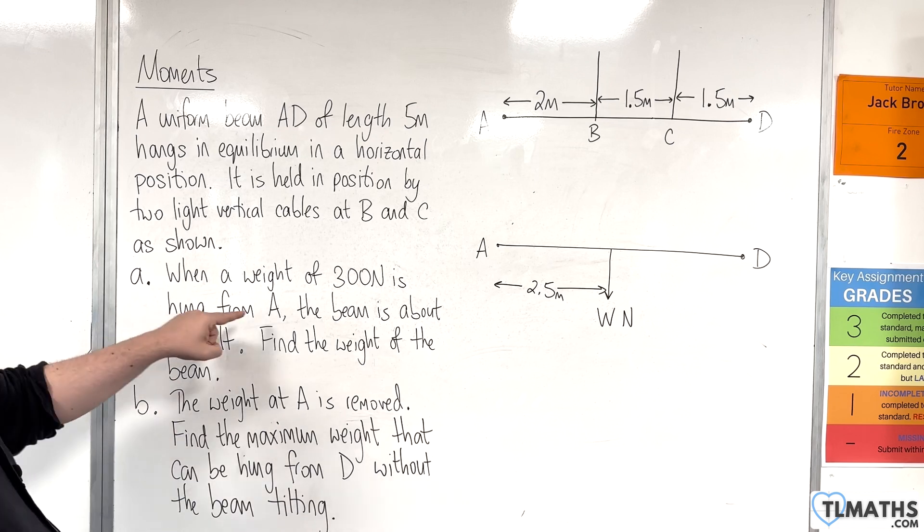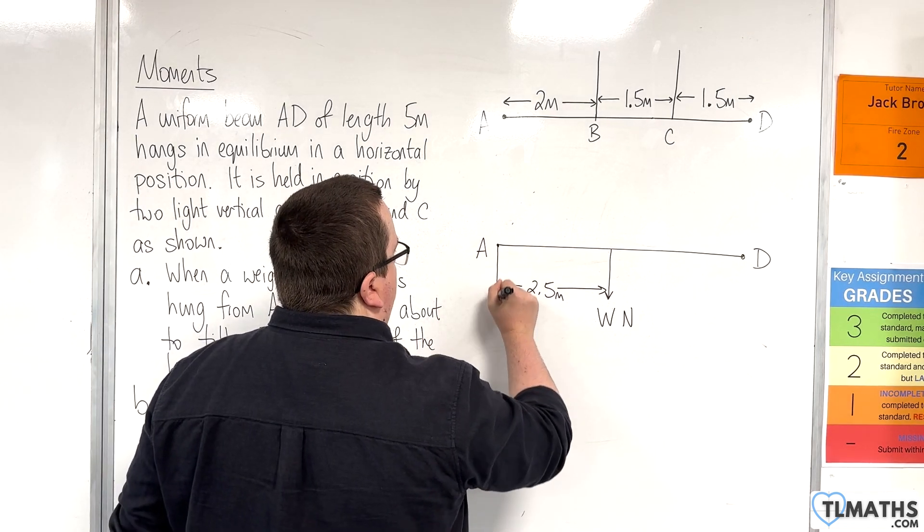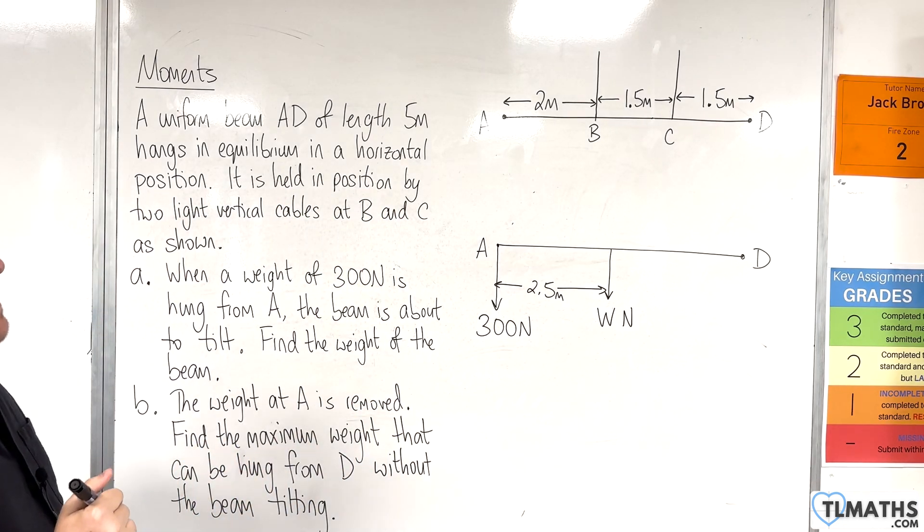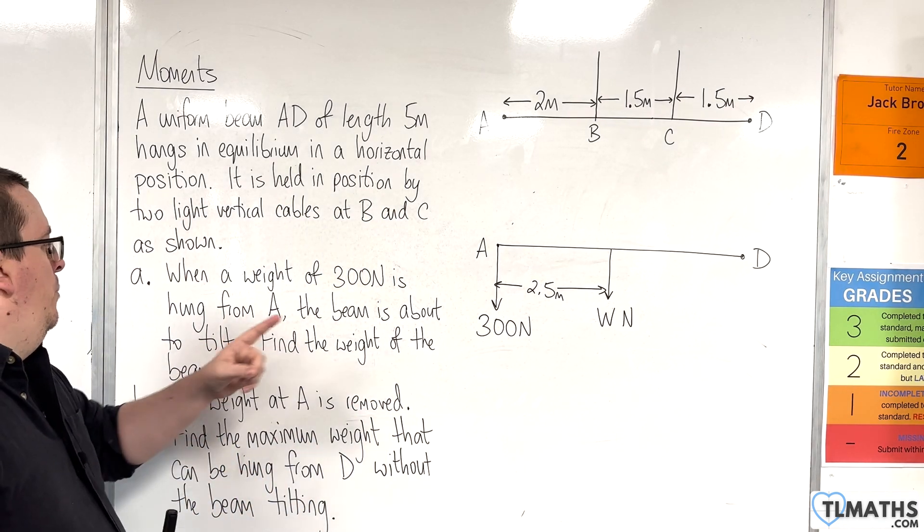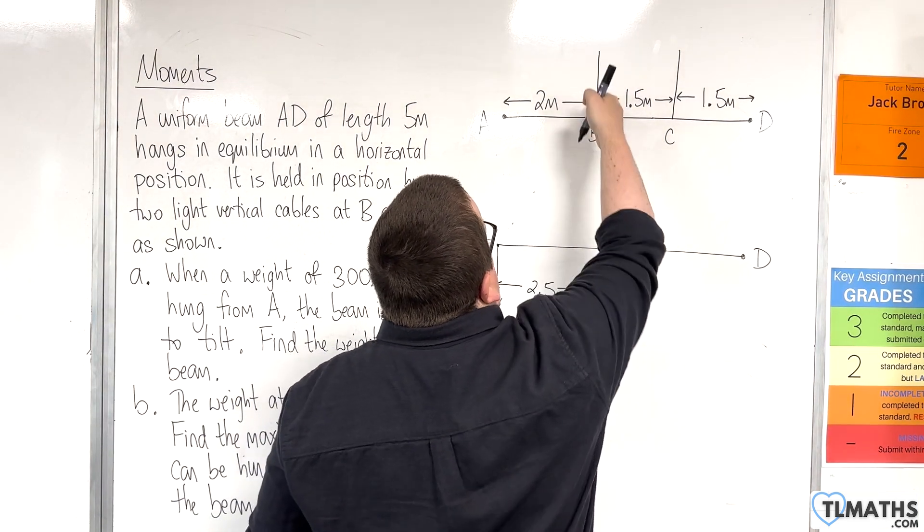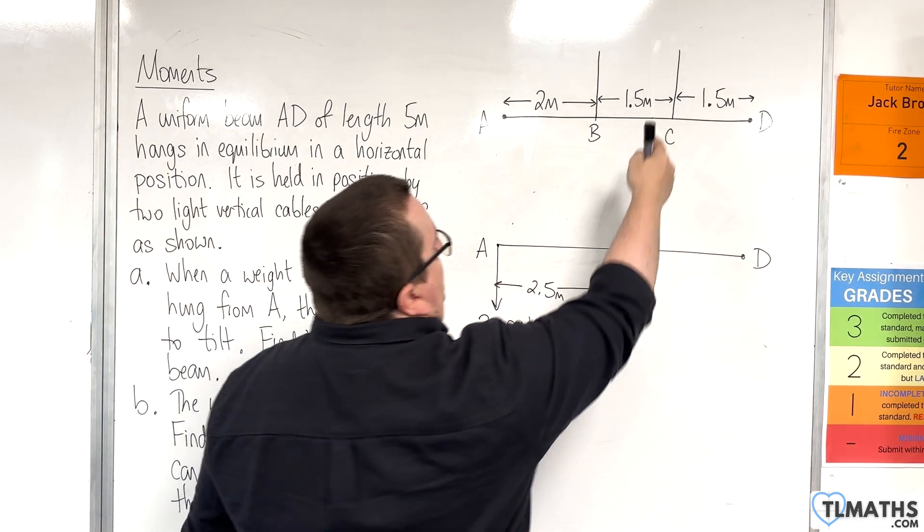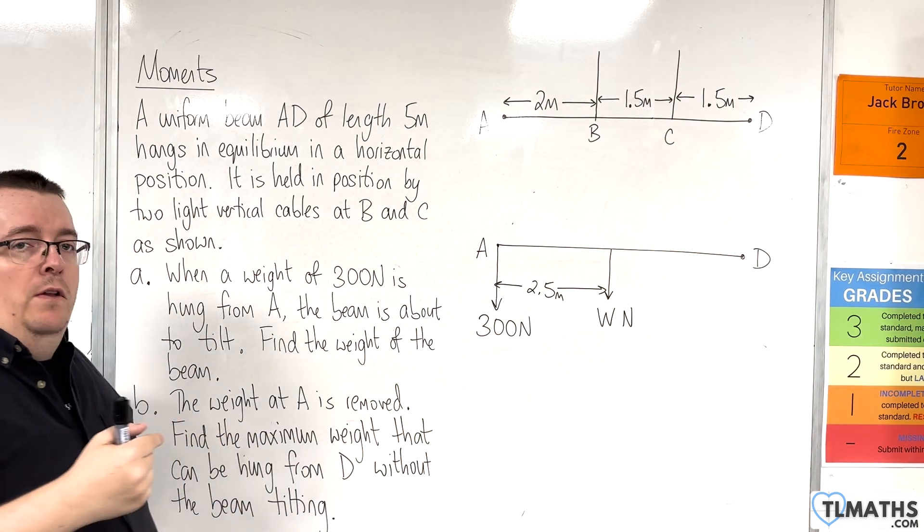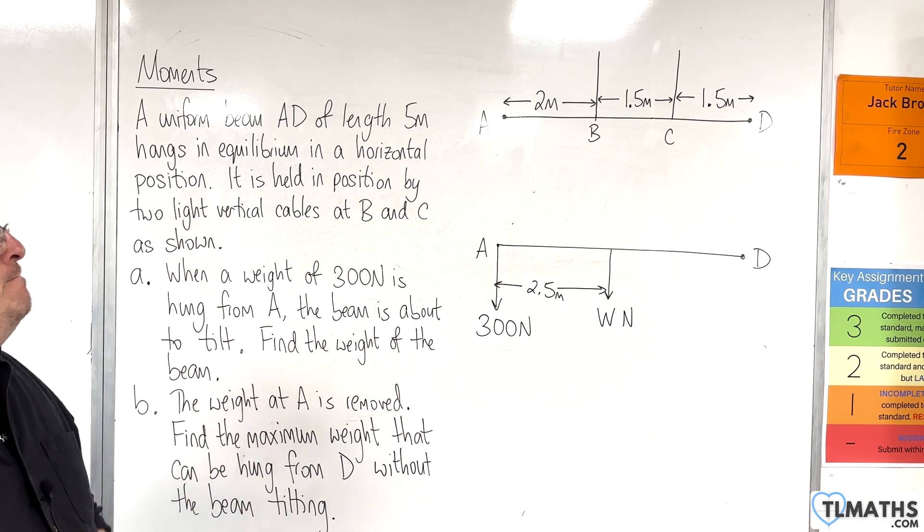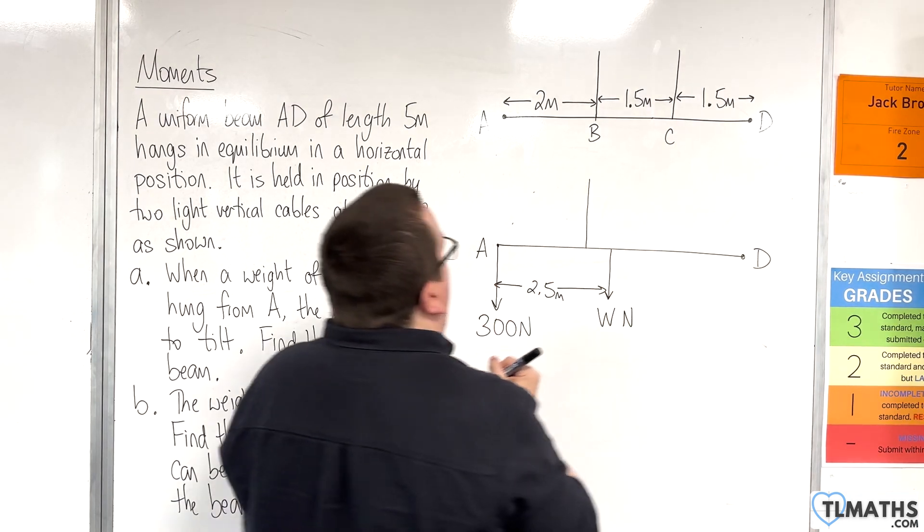Now if we are attaching a weight of 300 newtons to A, so 300 newtons going downwards there, then what's going to happen is, if it's on the point of tilting, that means that the brunt of the weight is being pulled through B. So that means that at C, there is no tension left in the string. It's essentially just about to go slack.